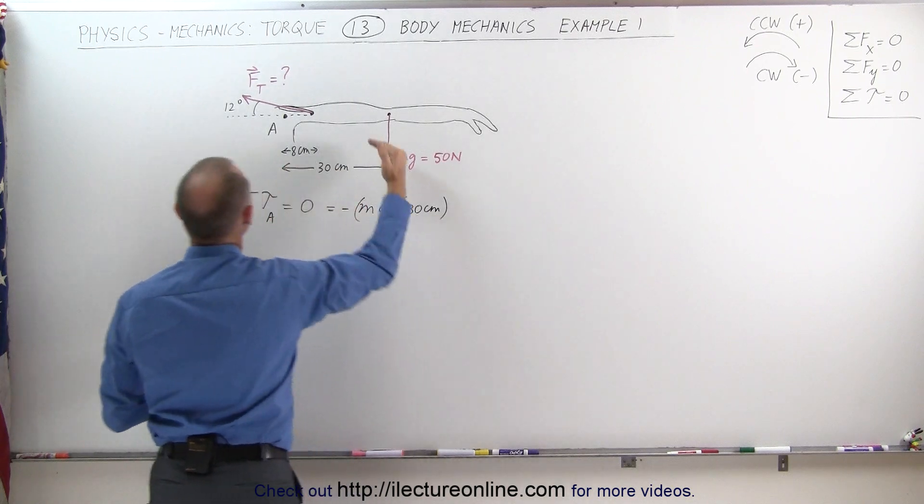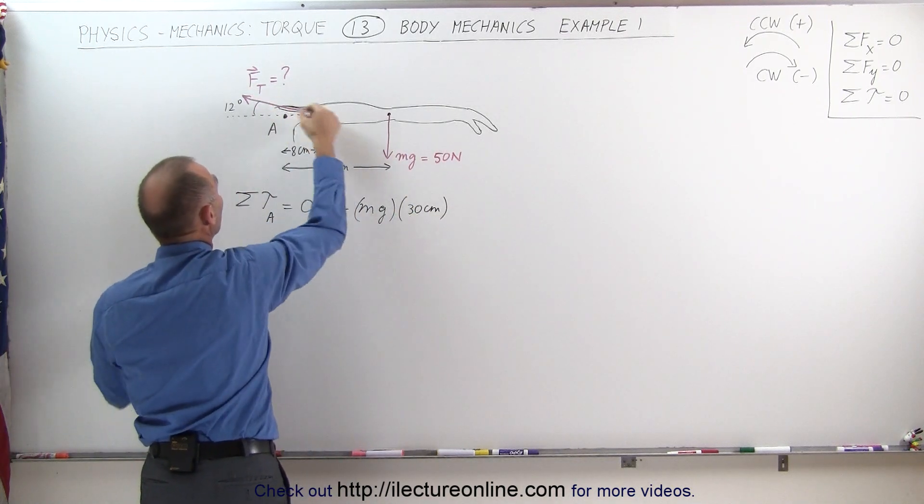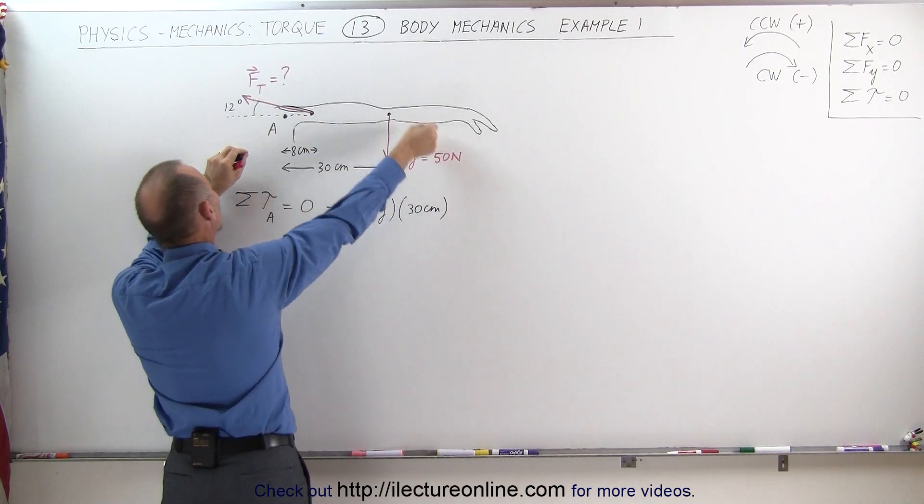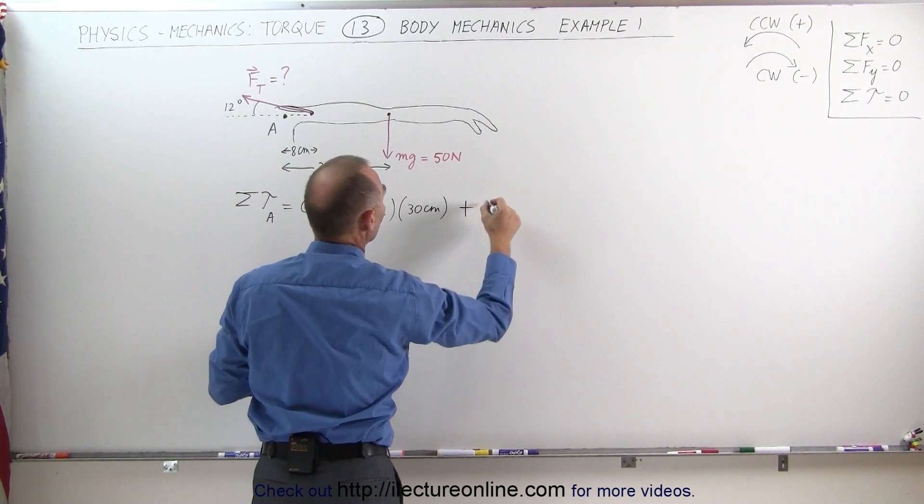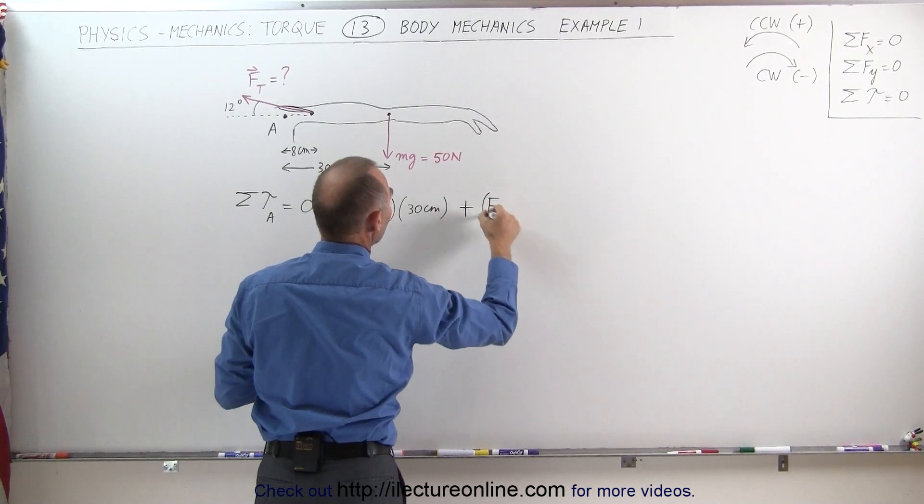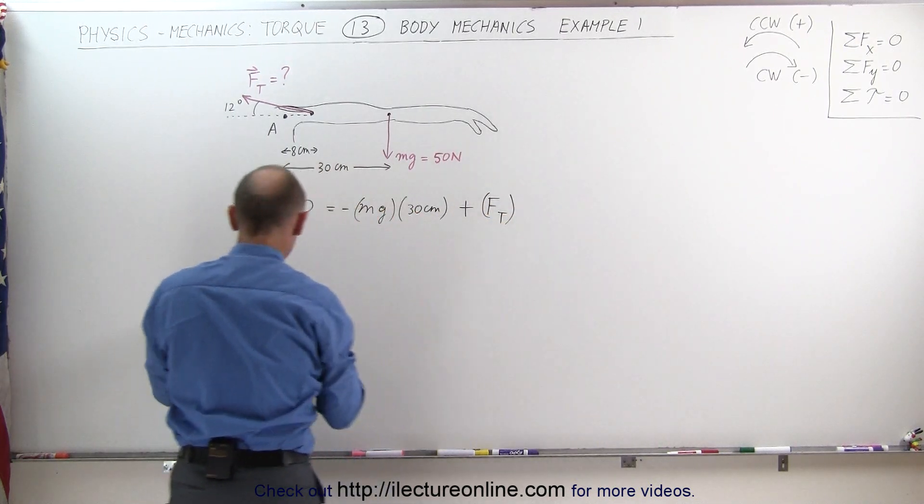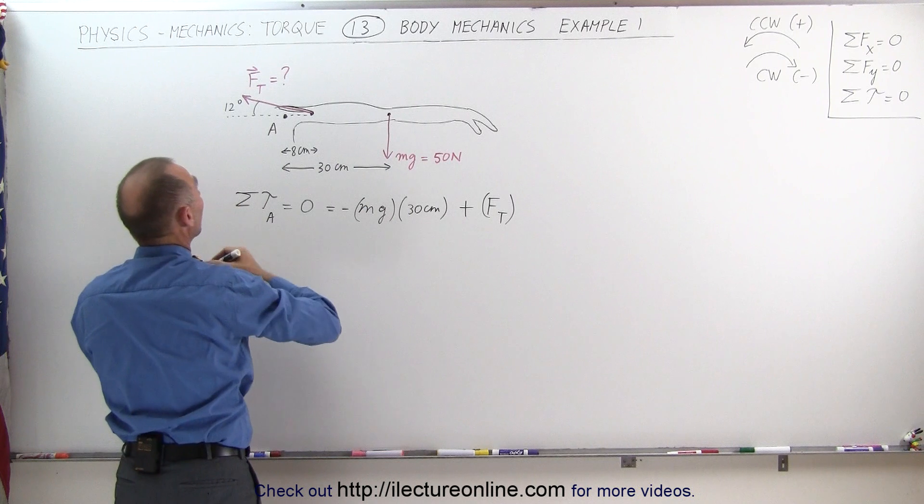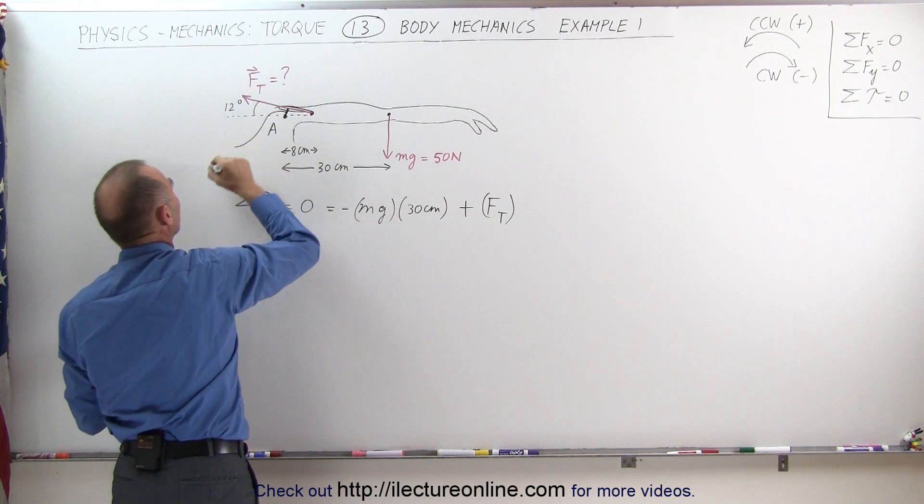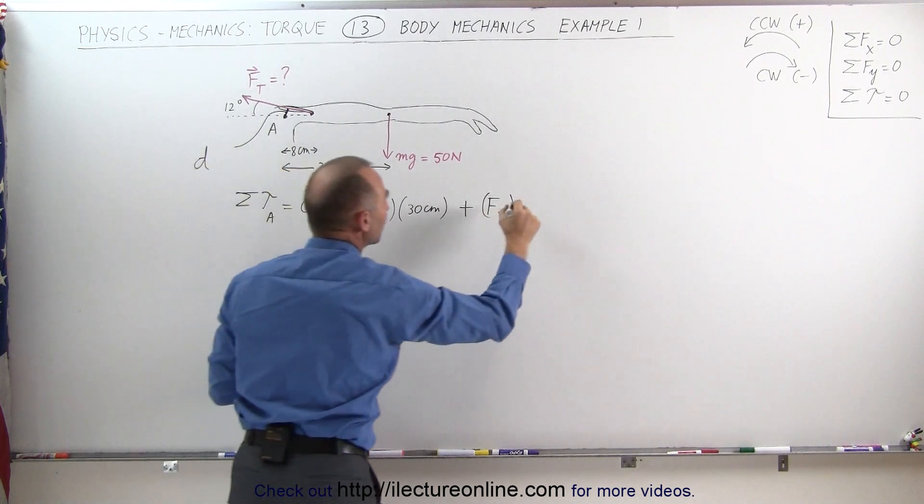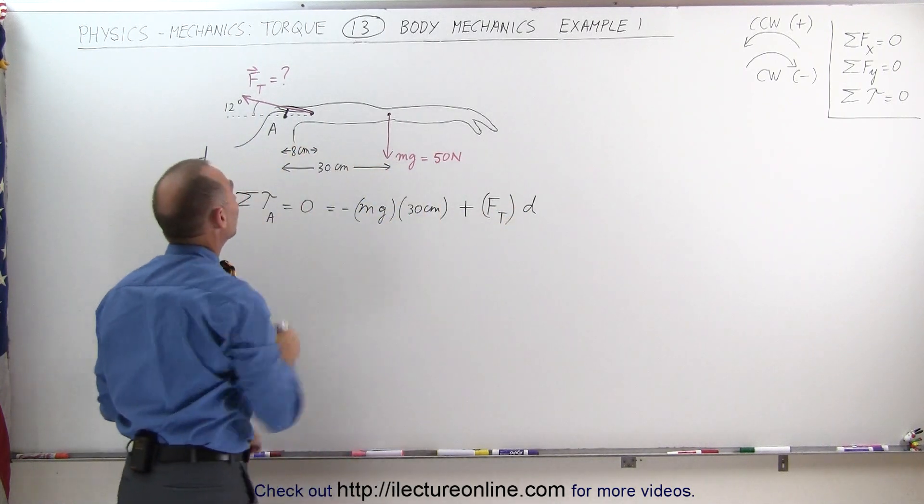Now we have the force caused by the tricep, which is pulling the arm in a counterclockwise direction. That's a positive force, or a positive torque, I should say. That would be the force from the tricep. Now we have to multiply that times the perpendicular distance from the line of action of the force to the pivot point. That's this distance right here, let's call that distance D. Now we need to figure out what that distance D is.